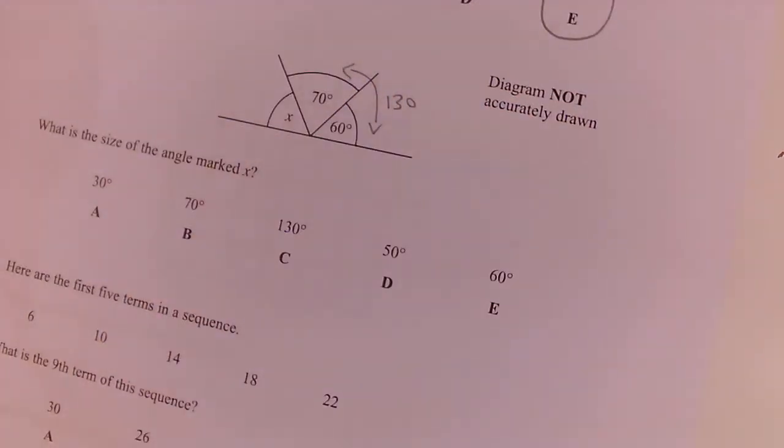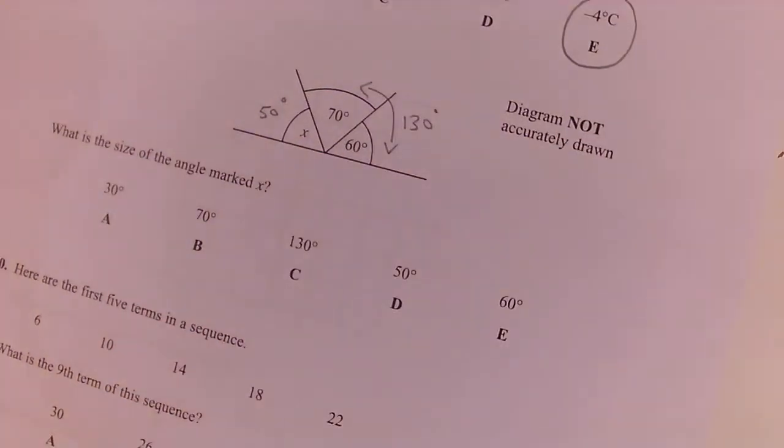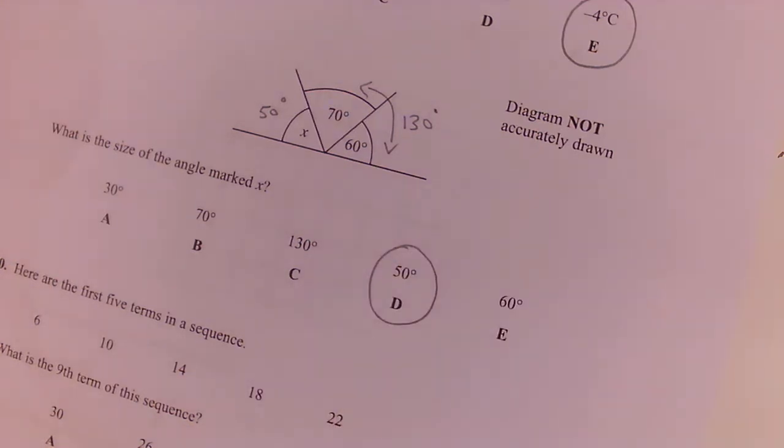So the one that's missing would be 50. So 50 and 130 would be 180. So the angle is 50.